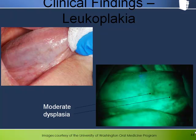Yet another example of the Velscope showing loss of fluorescence that makes an area of suspicion more visible than in white light. The combination of both visualization methods significantly enhances the diagnostic data for decision-making. The dark areas in the anterior region of changes on the scope were vague in the clinical view but were found to contain moderate dysplasia.